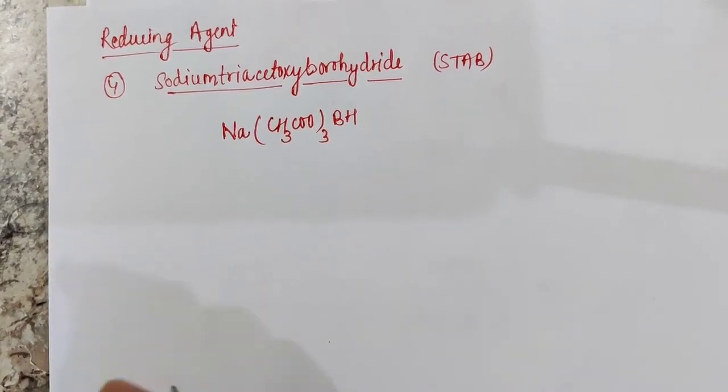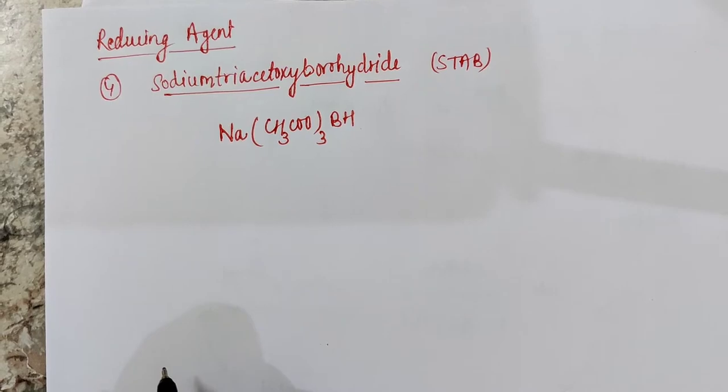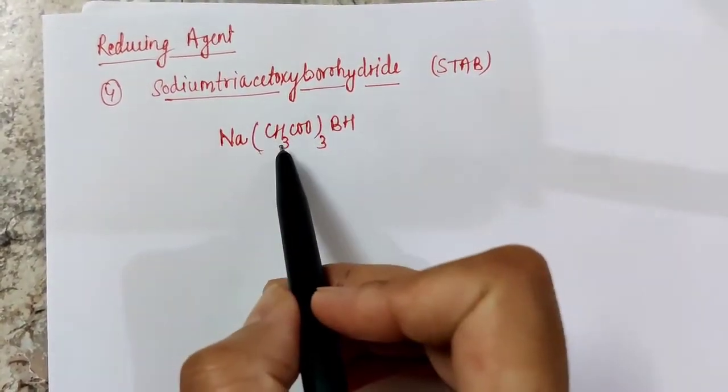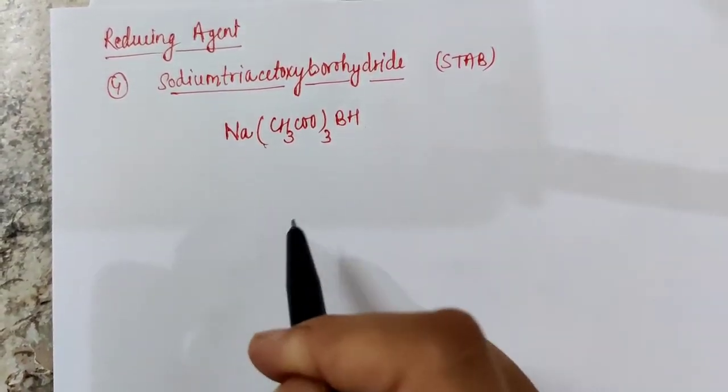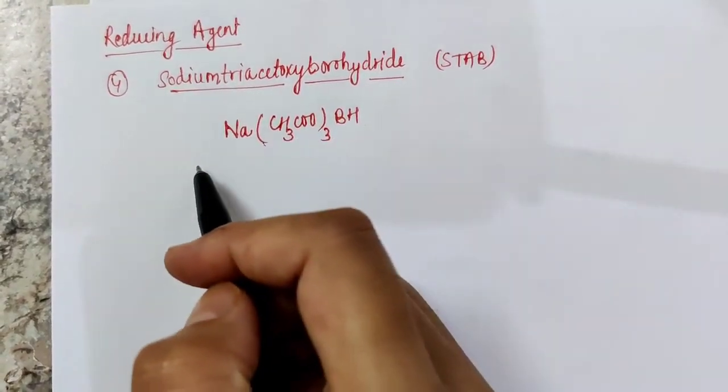The next reducing agent that we have to study is sodium triacetoxy borohydride. Sodium triacetoxy borohydride is also called sodium triacetoxy hydroborate. It is a reducing agent.